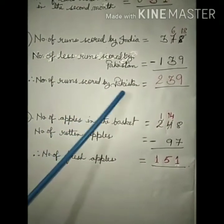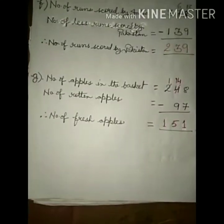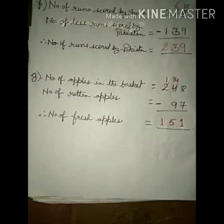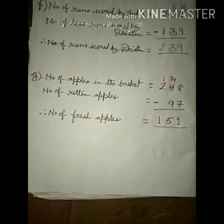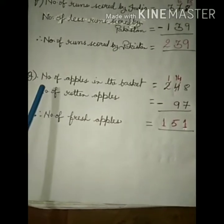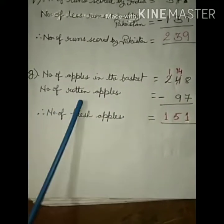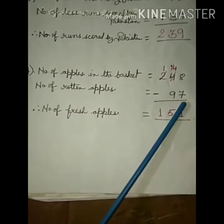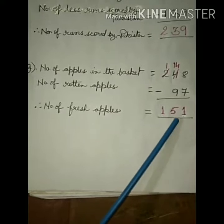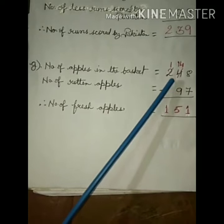G: There were 248 apples in the basket. 97 apples were rotten. How many apples were fresh? Answer: Number of apples in the basket: 248. Number of rotten apples: 97.